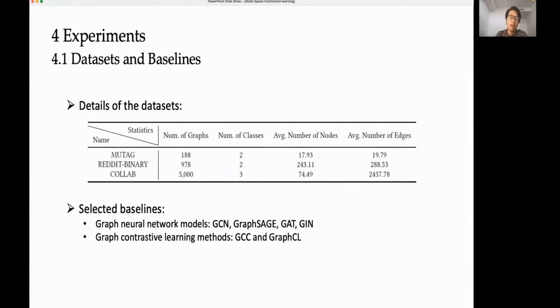Next will be the experimental part. First, I will briefly introduce the datasets and baselines we adopt to conduct the experiment. For datasets, we selected three publicly available and widely used datasets: Mutech, Reddit Binary, and Collab. For baselines, we have two categories: graph neural network models and graph contrastive learning methods. GNN models include GCN, GraphSage, GAT, and GIN. Graph contrastive learning methods include GCC and GraphCL.